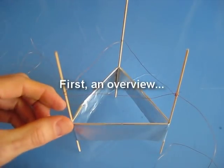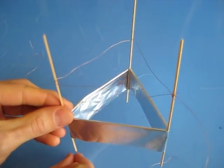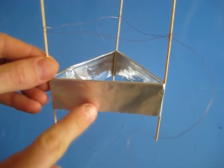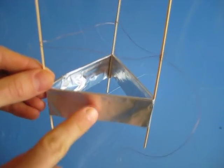Before I explain how to build this lifter, I just want to go over a few points. There are basically two electrodes. There's this thin wire electrode up here, and then there's this metal foil skirt right here.